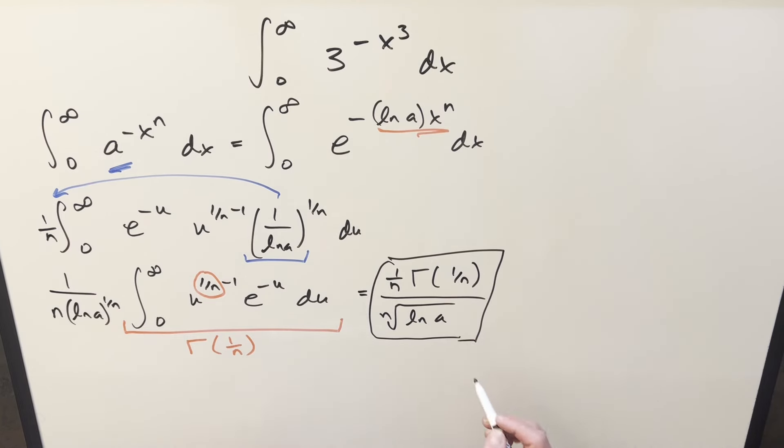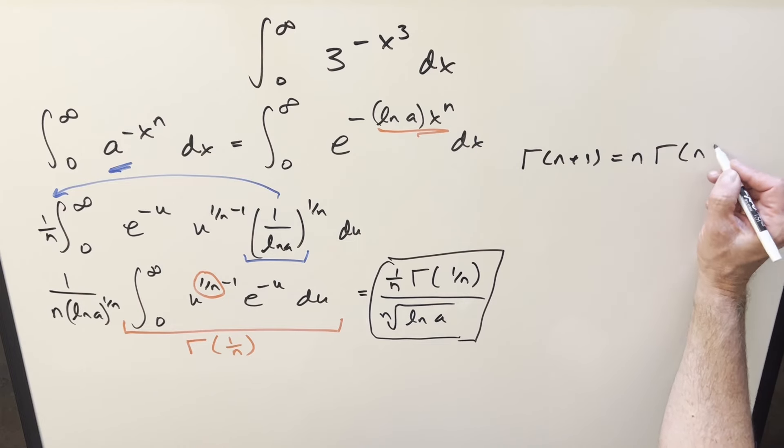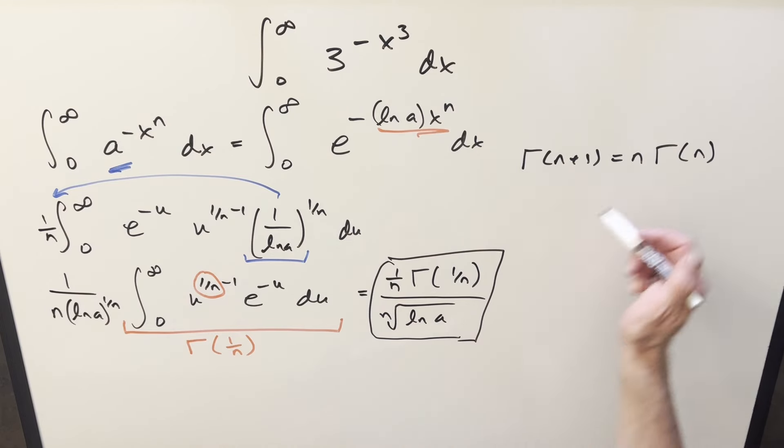But one other way we could do this, we also have a nice formula for the gamma function. If we had, say, let's see, typically like if it's written like this, if you have gamma of n plus 1, this is going to be the same thing as n times gamma of n. So using on this, going in reverse, we can just add 1 to it and write this as gamma of 1 over n plus 1 over the same stuff here.